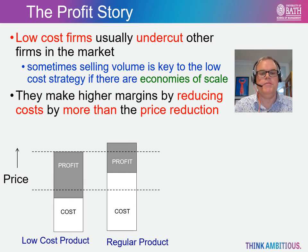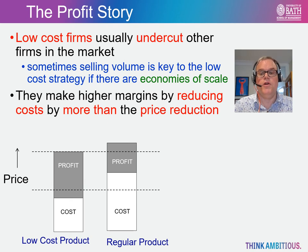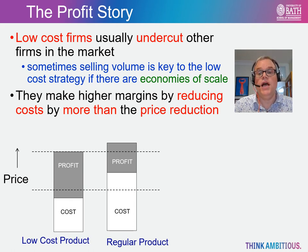The key point to remember is that in each case the low cost strategy almost invariably involves reducing the quality of the product or service relative to differentiated goods. For firms pursuing a low cost strategy the aim is to undercut the prices of other firms in the marketplace. In order to achieve this, firms may look to sell large volumes, especially when they can benefit from economies of scale and lower their average cost of production. The profit margin is demonstrated in the diagram, which shows the price and cost per unit for a low cost product versus a regular product.